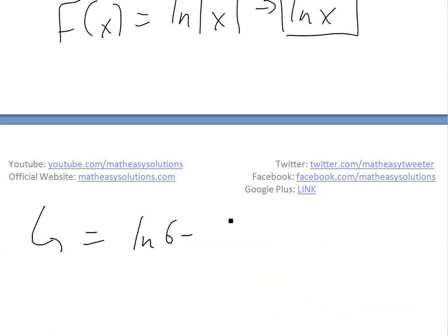This equals ln 6 minus ln 3. Using the logarithmic rules I showed in my earlier video, this equals ln of 6 divided by 3, which equals ln 2.